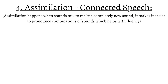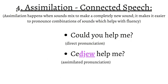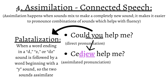The next concept is assimilation, and it happens when sounds mix to make a completely new sound. This process makes it easier to pronounce combinations of sounds, which helps with fluency. A very common example of assimilation is the word 'could' with 'you' — 'could you help me?' To make an assimilated pronunciation, we mix 'could' with 'you.' The sound of D in 'could' combines with 'you' to make 'could you.' This is a type of assimilation called palatalization, which happens when a word ending in a D, Z, or ZH sound is followed by a word beginning with a Y sound.